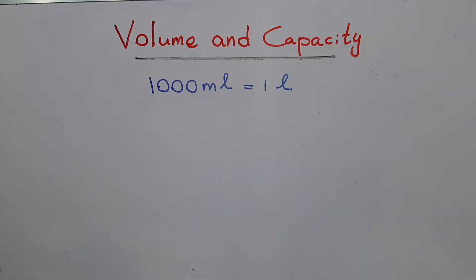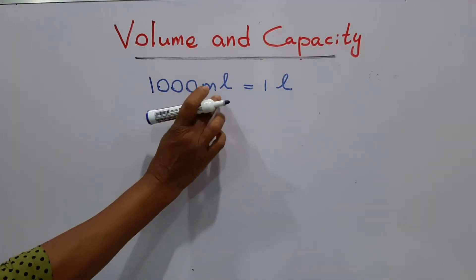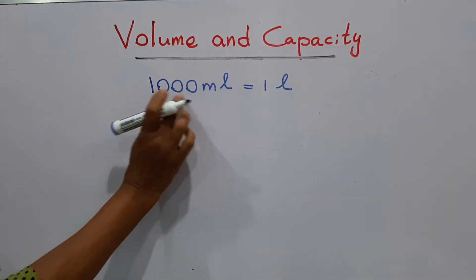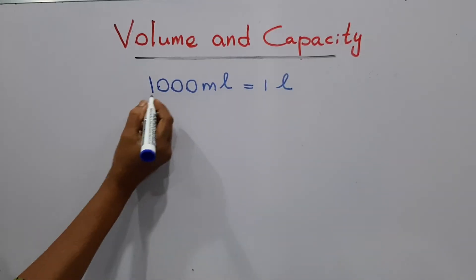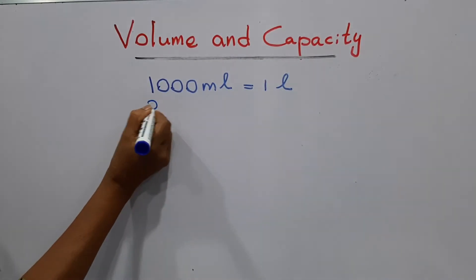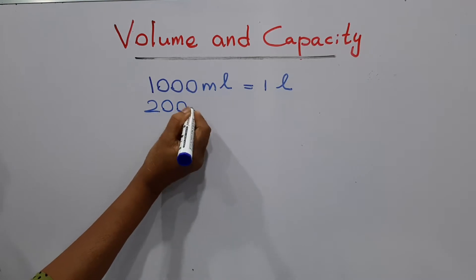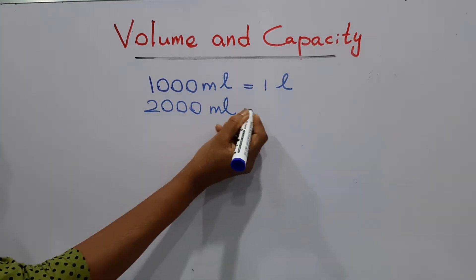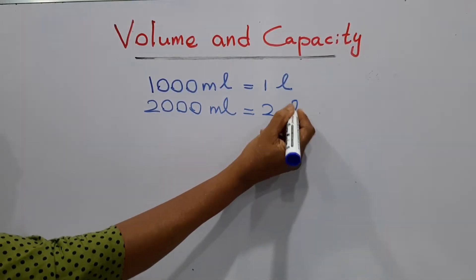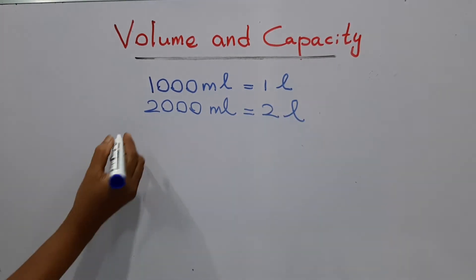Here is the connection between milliliters and liters. One thousand milliliters equals one liter. When it comes to two thousand milliliters, that equals two liters.